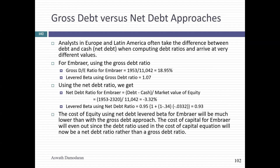All the debt ratios I talk about are gross debt ratios — total debt divided by market value. For Embraer, the total debt divided by market value of equity gave a debt ratio of 18.95%, which I used to get a levered beta of 1.0. But in Europe and Latin America, people often talk about net debt ratios: total debt minus cash. The net debt ratio for Embraer is actually minus 3.32%.